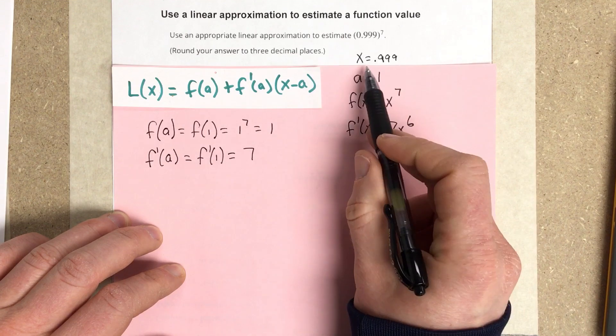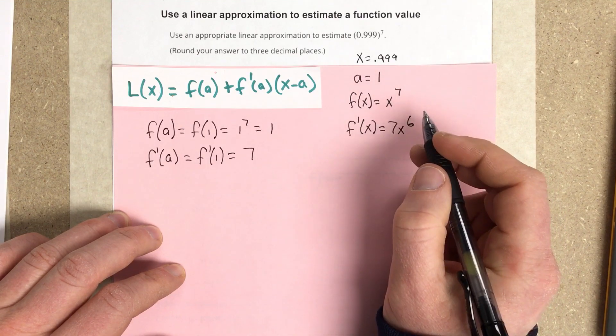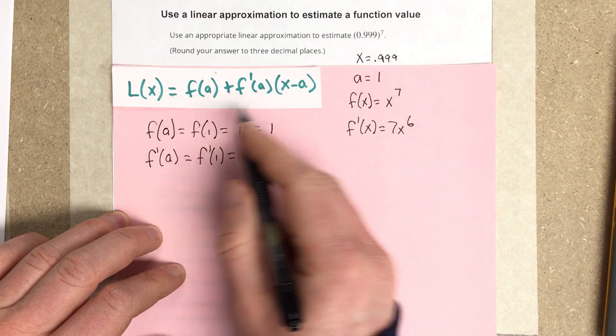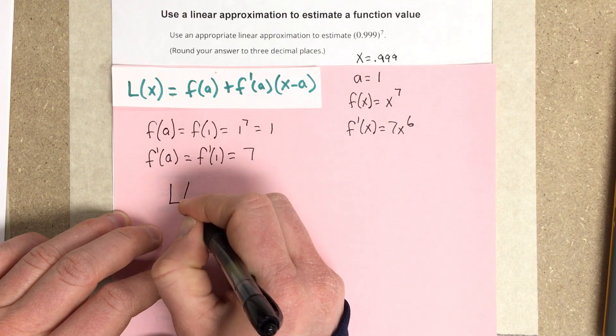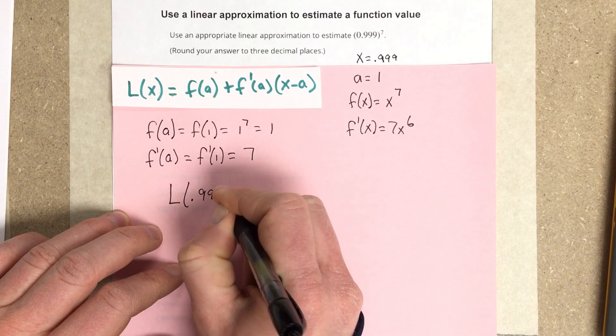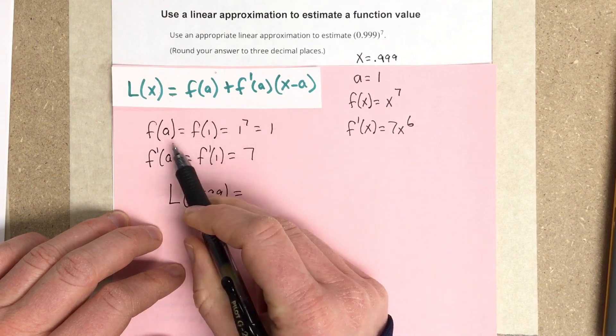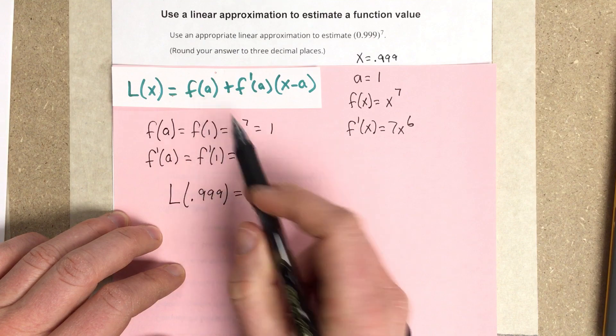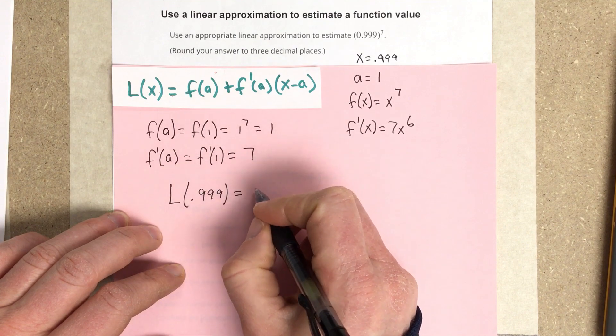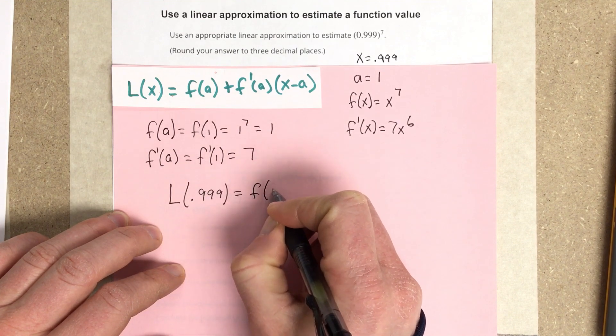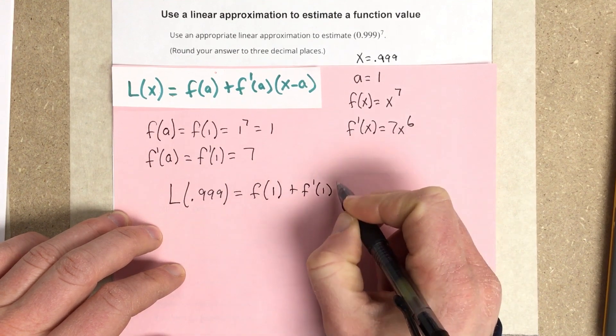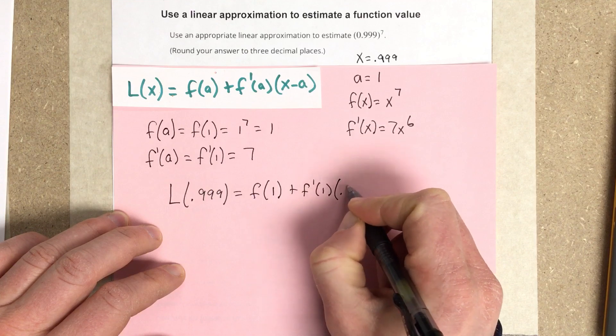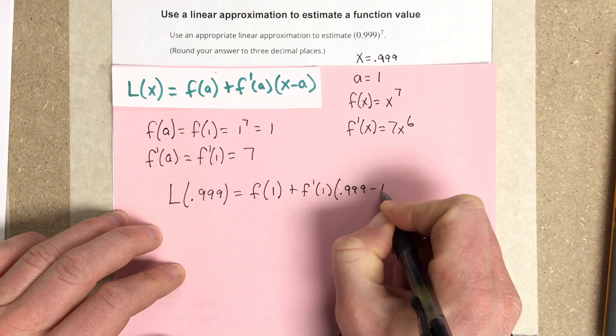Now, I know my x value is 0.999. So I can go ahead and start using this formula and replace. So I can say L of 0.999 is equal to f of a, which in our case is f of 1 plus f prime of 1, and this would be times 0.999 minus 1.